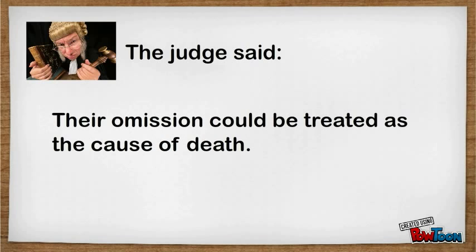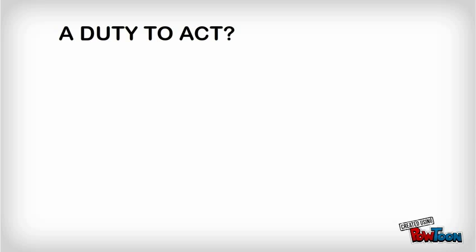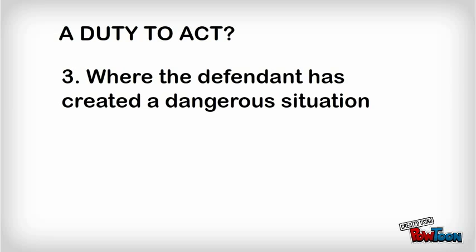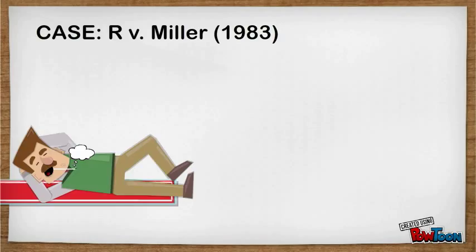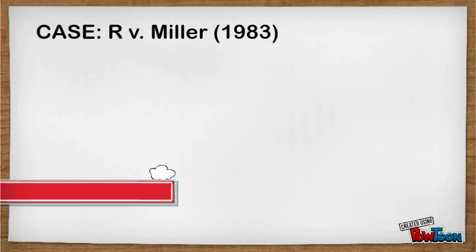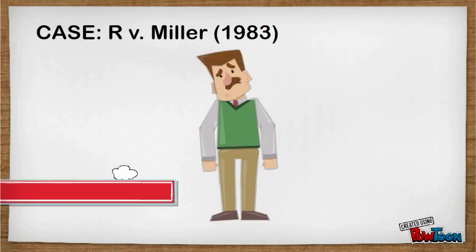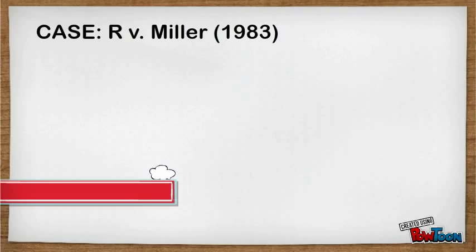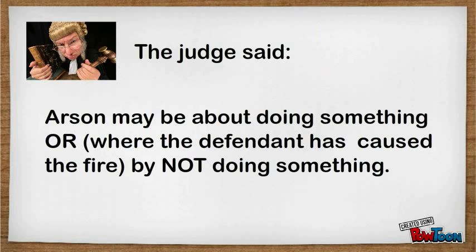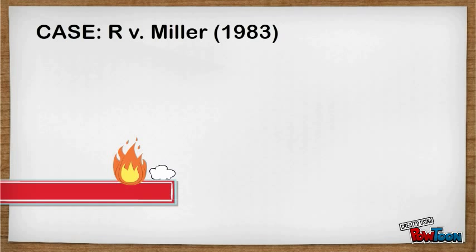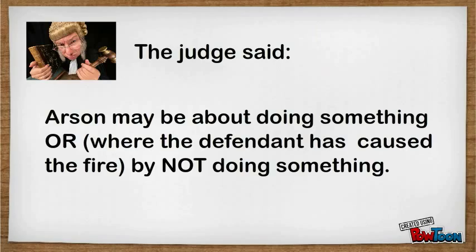Thirdly, where the defendant has created a dangerous situation. Admitting to do something about a dangerous situation that you have caused can amount to actus reus. Take the example of Miller. Miller was squatting in a house. One night he fell asleep while lying on a mattress smoking a cigarette. When he woke up, he saw that he had dropped the cigarette in his sleep and that the mattress was smouldering. He did nothing about it — he simply moved to another room and went back to sleep. The house caught fire. The defendant's conviction for the crime of arson was confirmed by the House of Lords. Lord Diplock said that arson may be committed by not only doing something that could cause a fire, but also where the defendant had caused the fire by not taking steps to put the fire out or call the fire brigade.